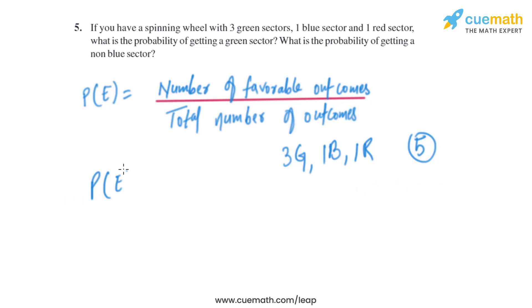We know that there are three green sectors divided by the total number of sectors which are five, so that is the probability of getting a green sector. Now let's find the probability of getting a non-blue sector.